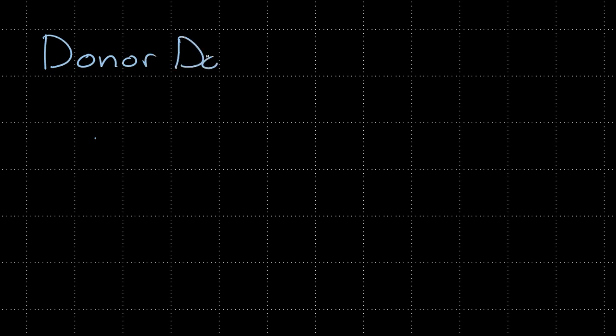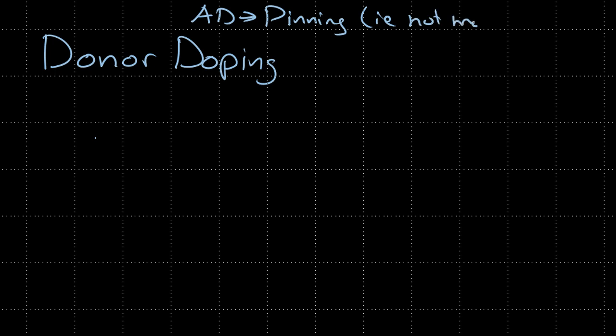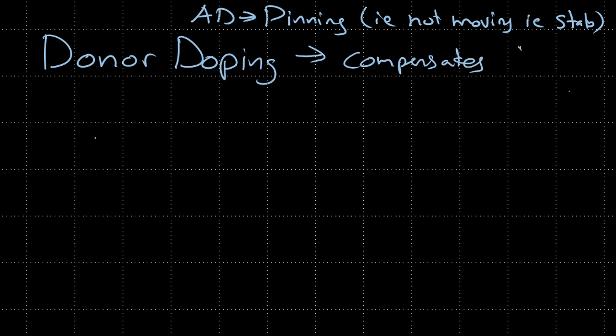Now we've effectively reduced the piezoelectric material properties by adding acceptor dopants to stabilize the domain wall. Next we're going to add what we scientifically call donor doping, and we're going to get those properties back. We'll kick those oxygen vacancies out, or render them useless for pinning. So acceptor doping leads to pinning — i.e., domain walls not moving — i.e., stabilization. Donor doping, on the other hand, compensates for the oxygen vacancies.